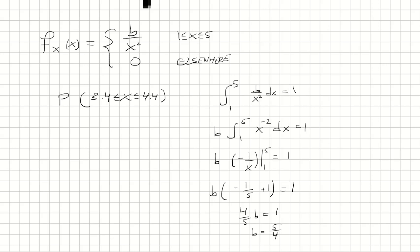So now we want to find the probability that x is between 3.4 and 4.4. So we're going to integrate our density function from 3.4 to 4.4.